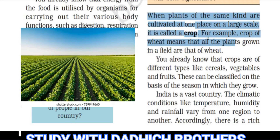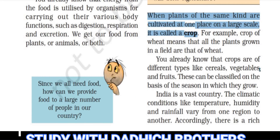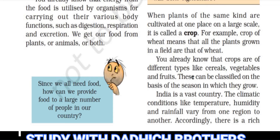When plants of the same kind are cultivated at one place on a large scale, it is called a crop. For example, if you have a field of 100 square metres planted with wheat or corn, all the plants grown in that field are of the same type — that is called a crop of wheat. You already know that crops are of different types like cereals, vegetables and fruits.